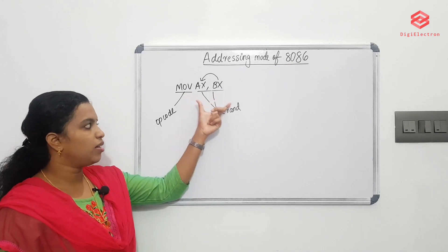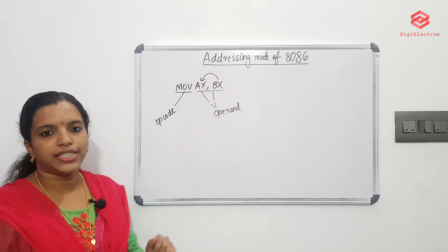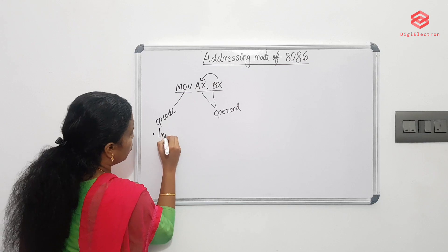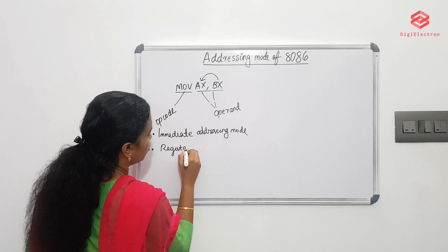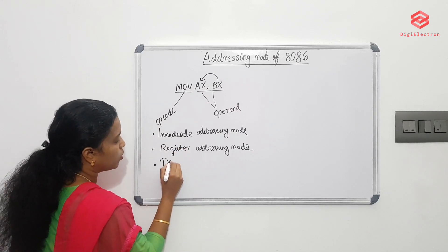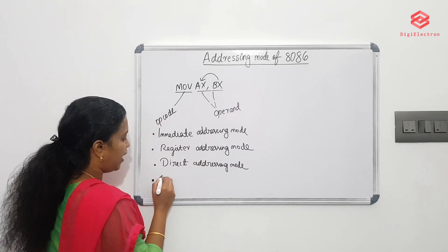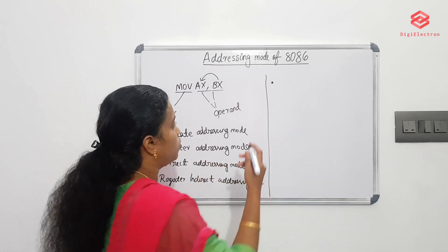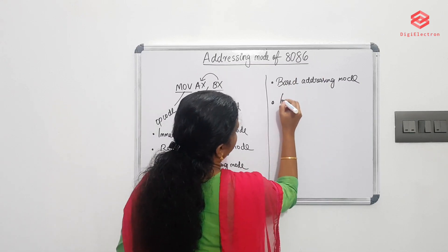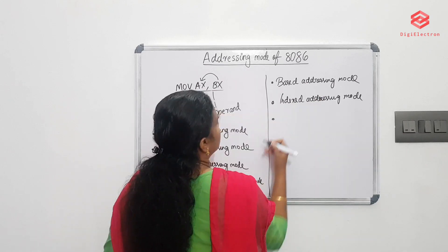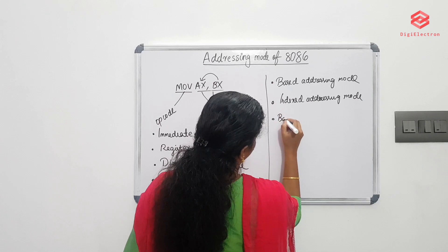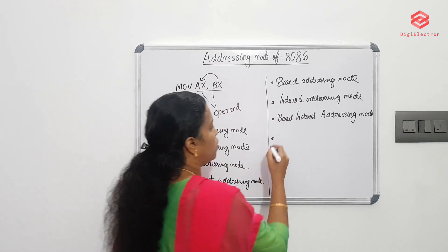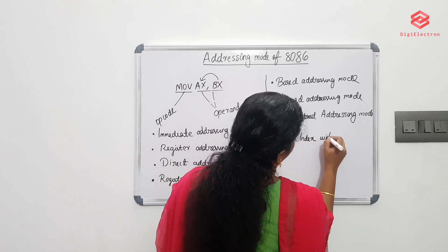One source of operand can be denoted in different ways — that is why we have addressing modes. 8086 has 8 addressing modes: immediate, register, direct, register indirect, based, indexed, based indexed, and based indexed with displacement addressing mode.